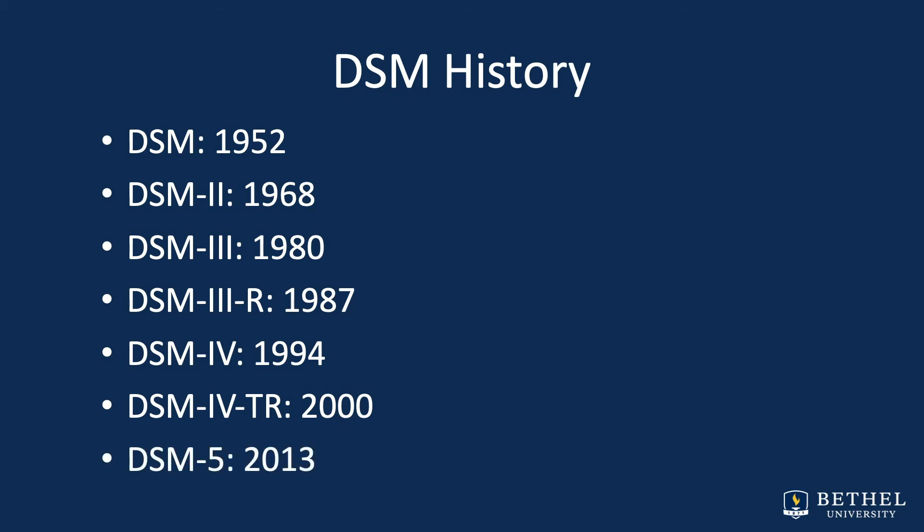Then the most recent, the DSM-5, was published in 2013 — 947 pages. Interestingly, they shifted from Roman numerals to our typical Arabic numerals to give the option for decimals, thus potentially a version 5.1, 5.2, and so forth.